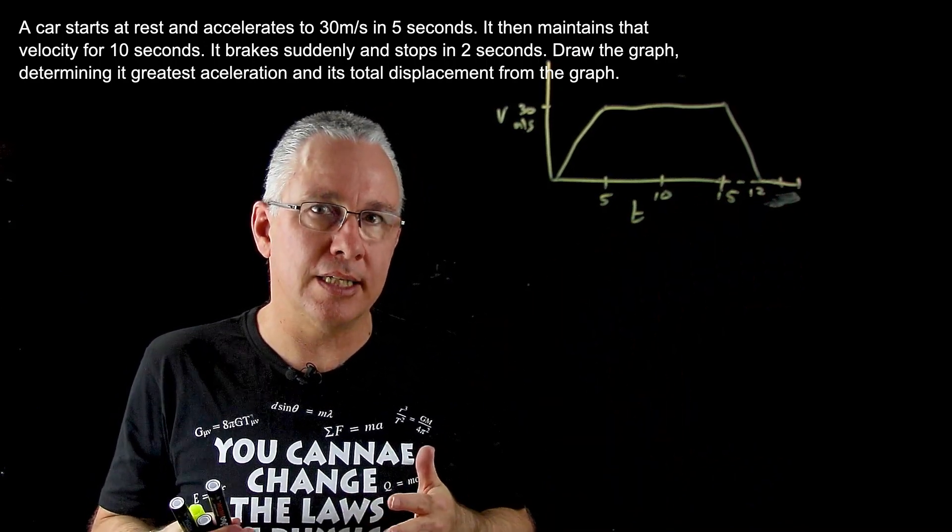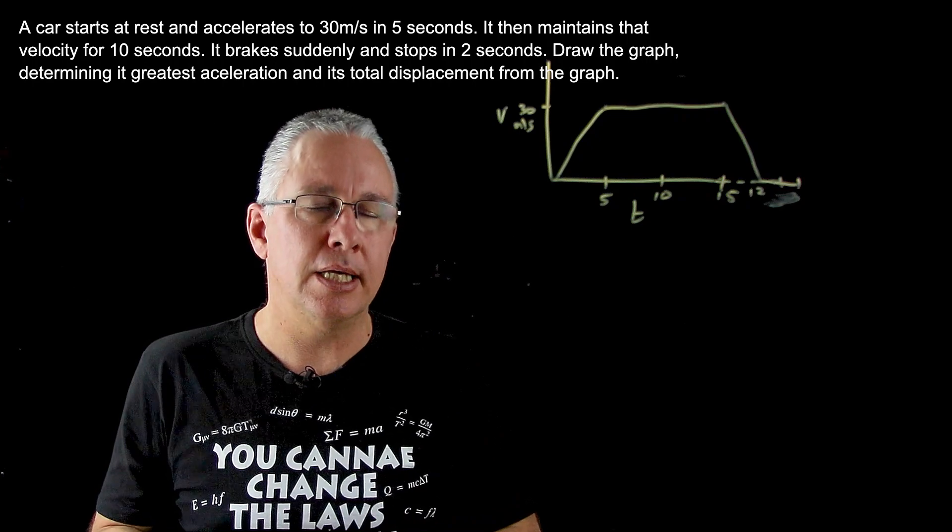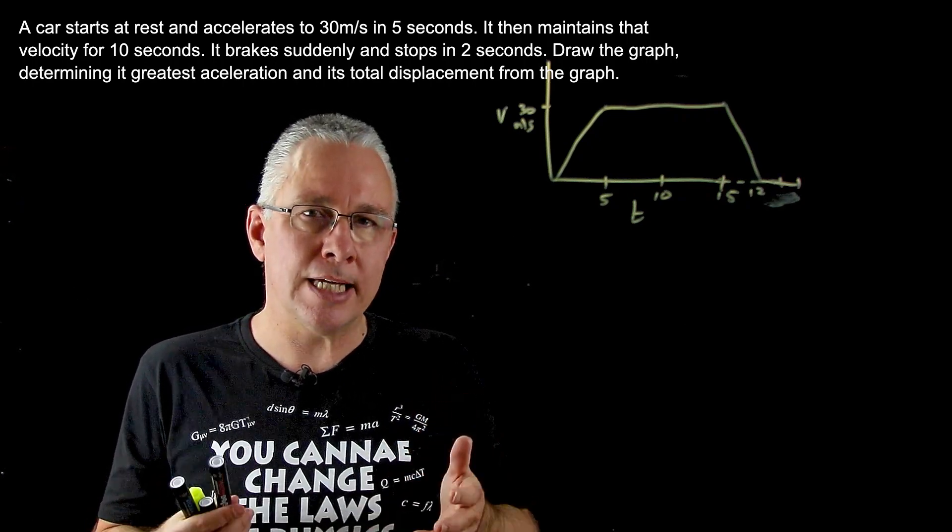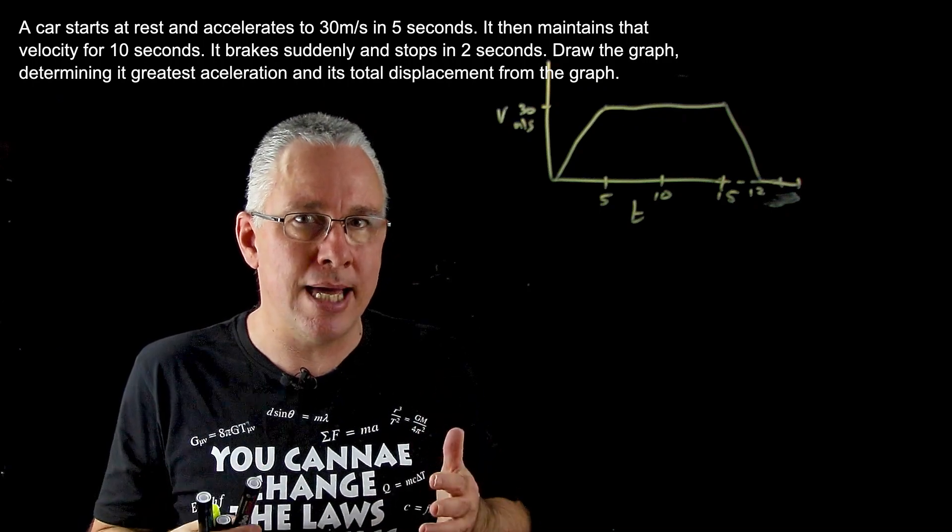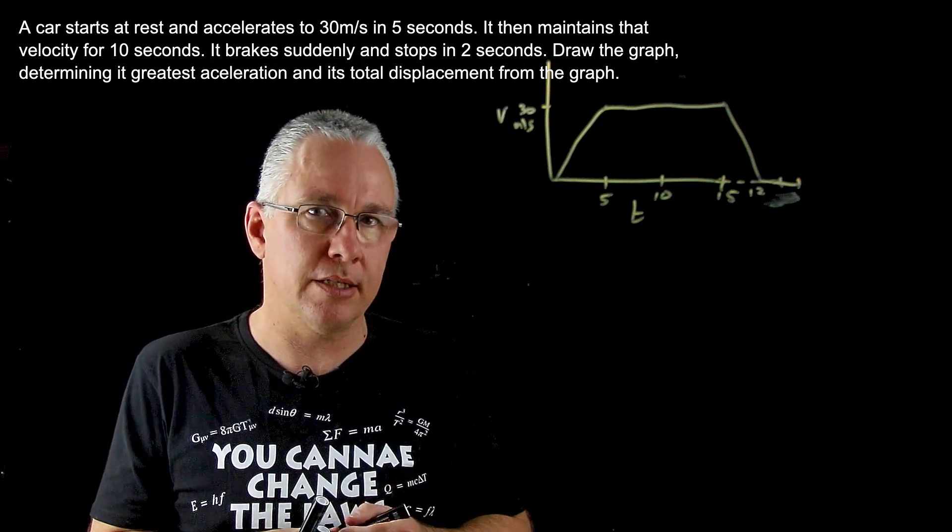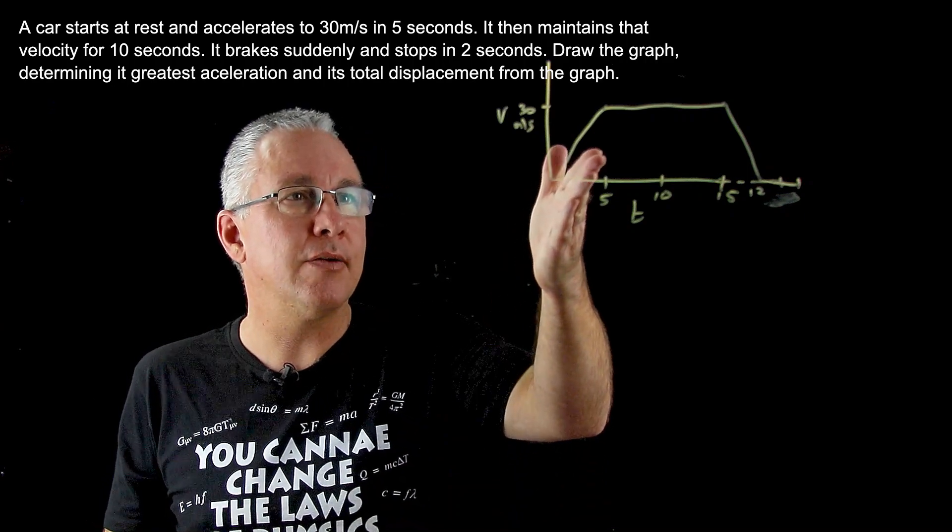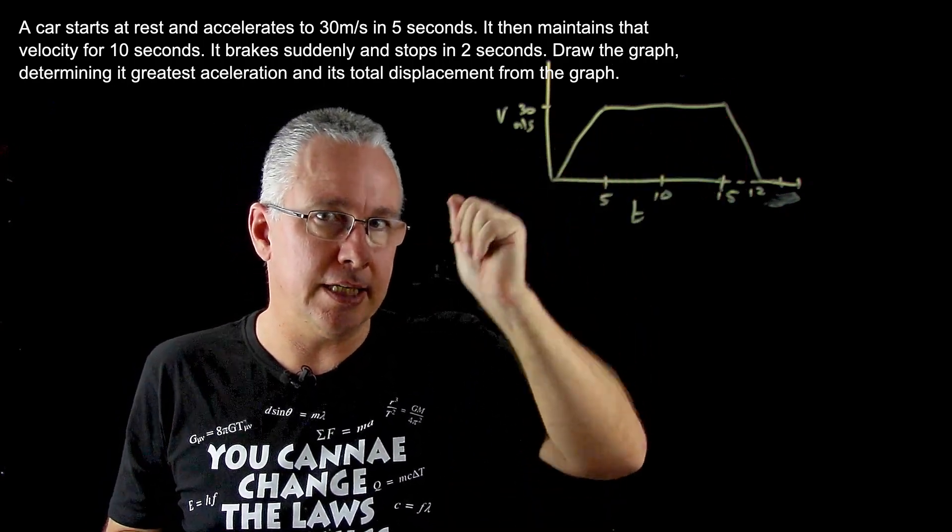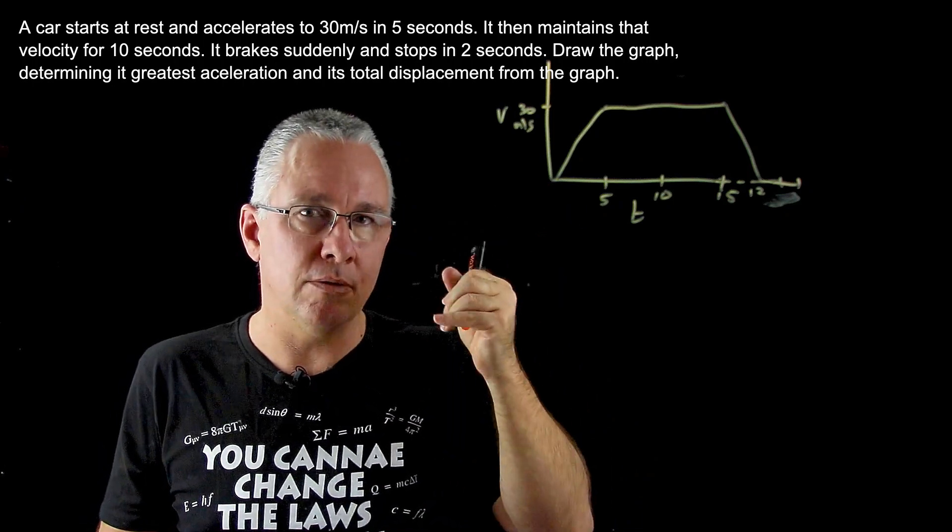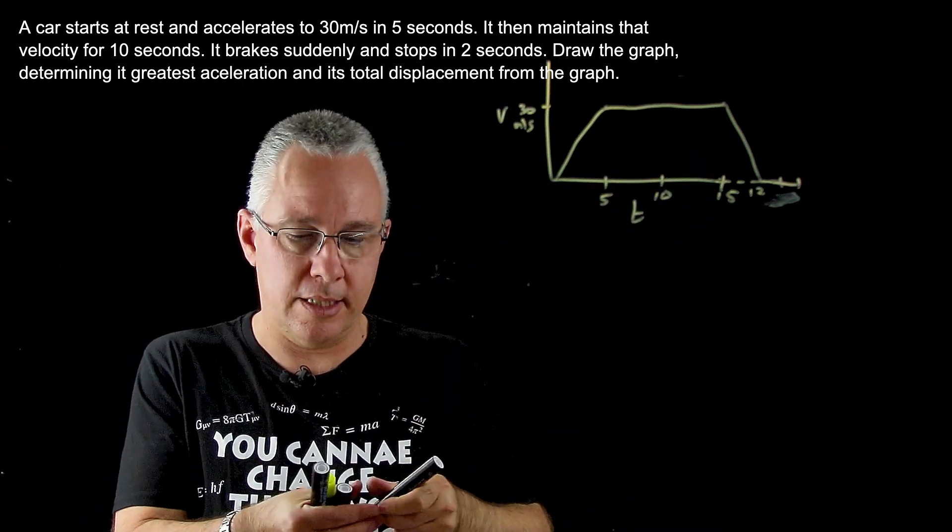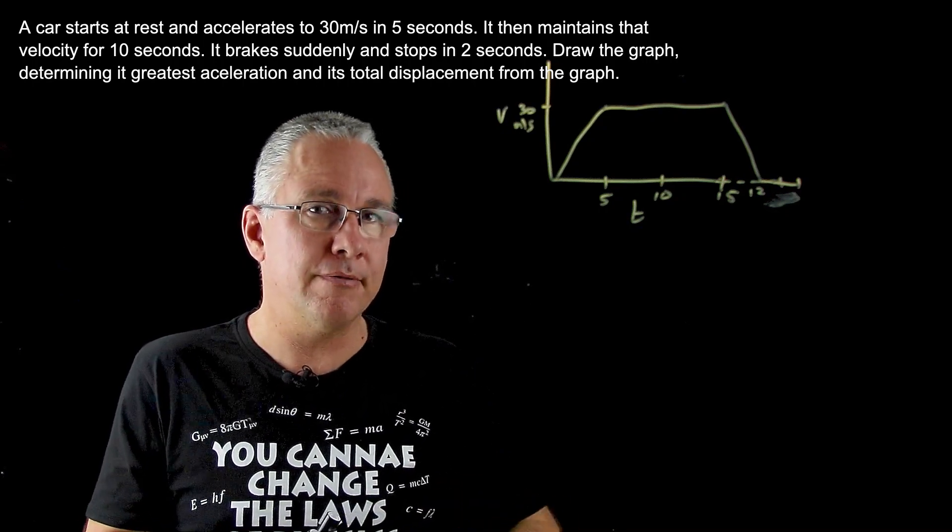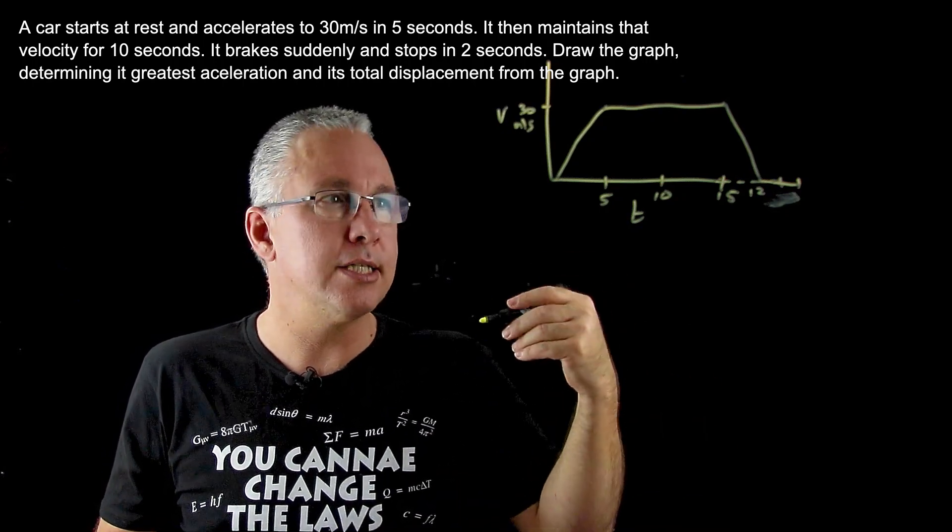What we're asked is the maximum acceleration and also the displacement. Now the maximum acceleration, at least in magnitude, is the steepest part of our slope. We have an acceleration here and an acceleration here, though this is a negative acceleration, but the magnitude is greatest there. To work that out, it's simply the slope - the rise over the run.